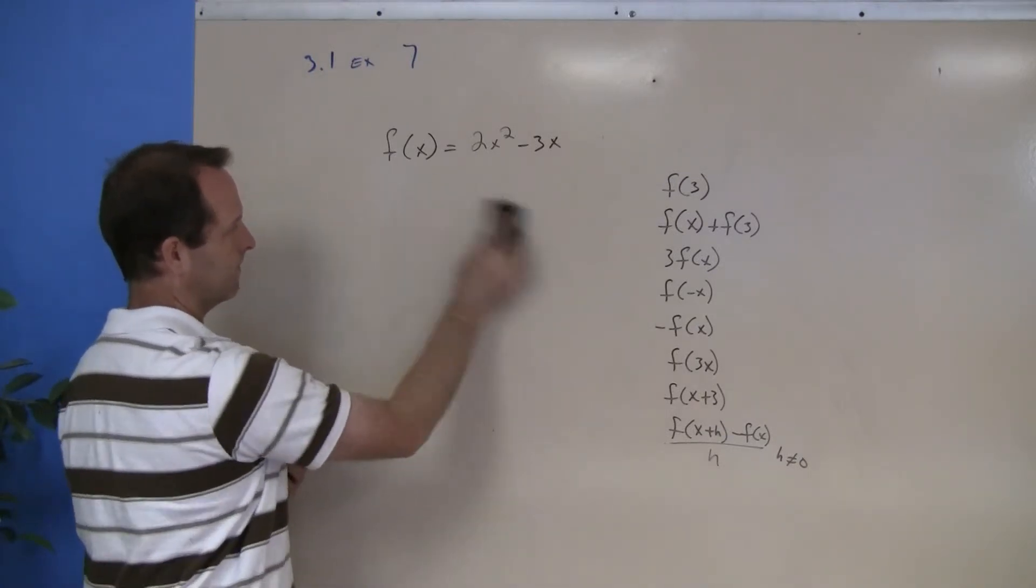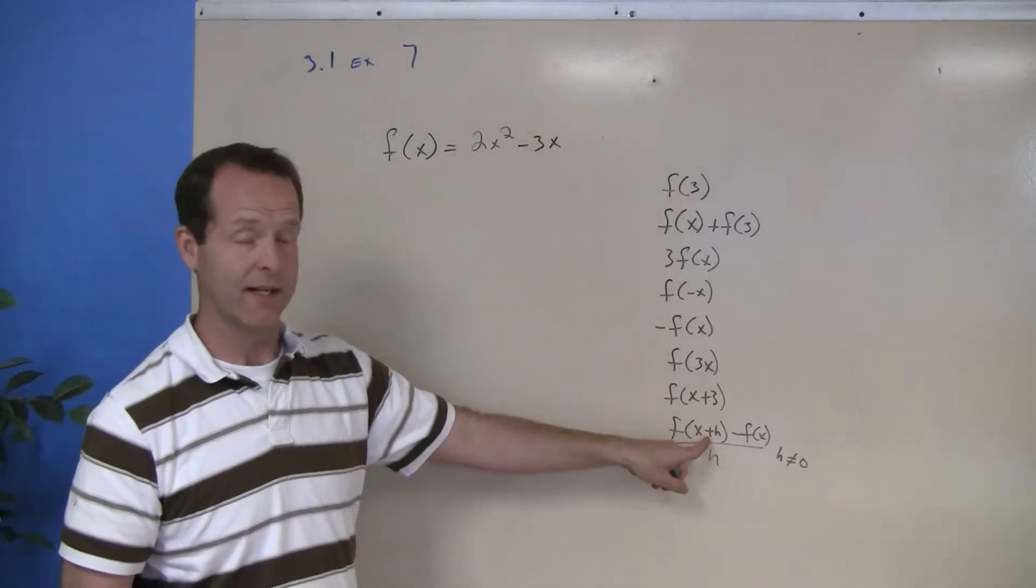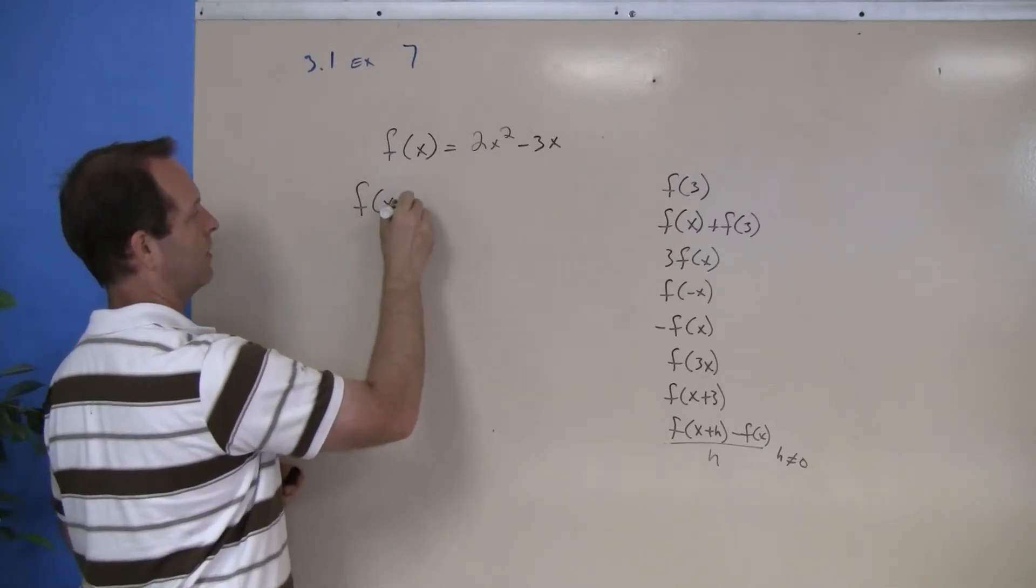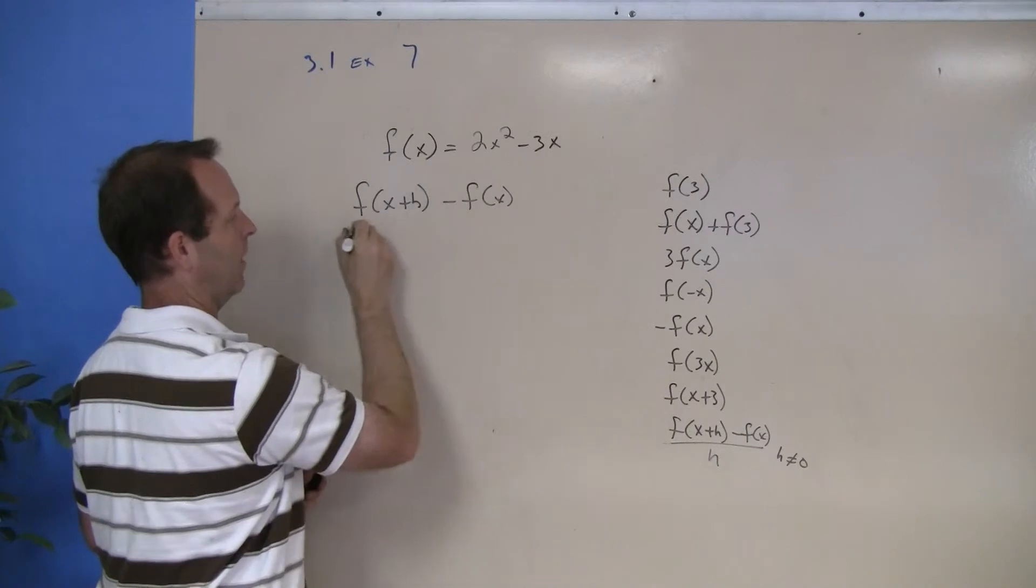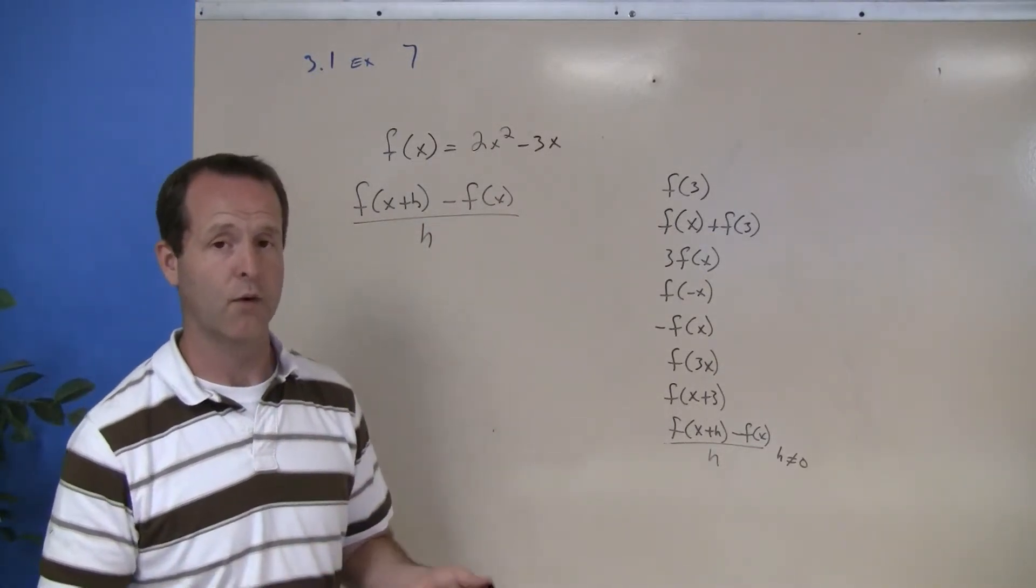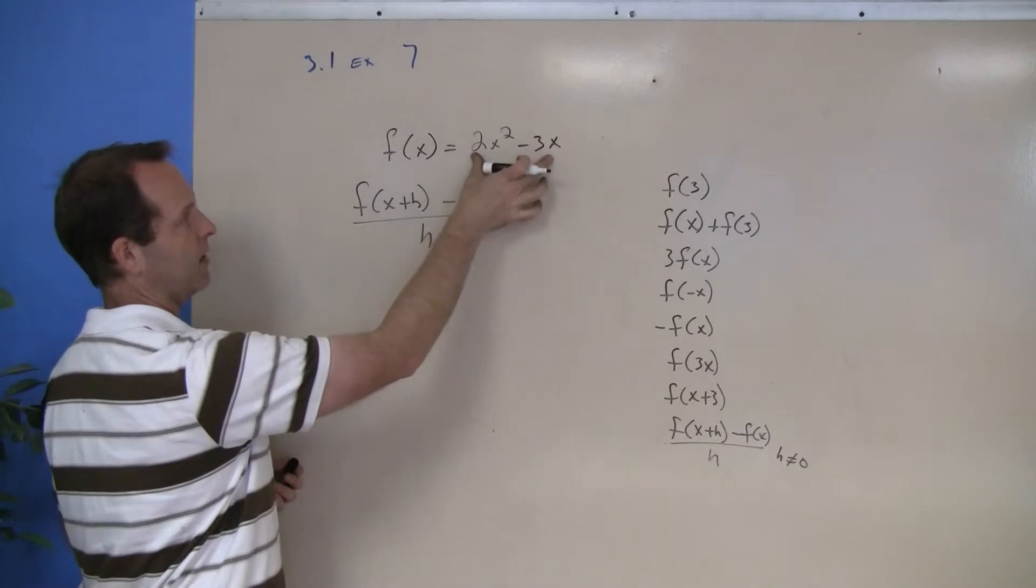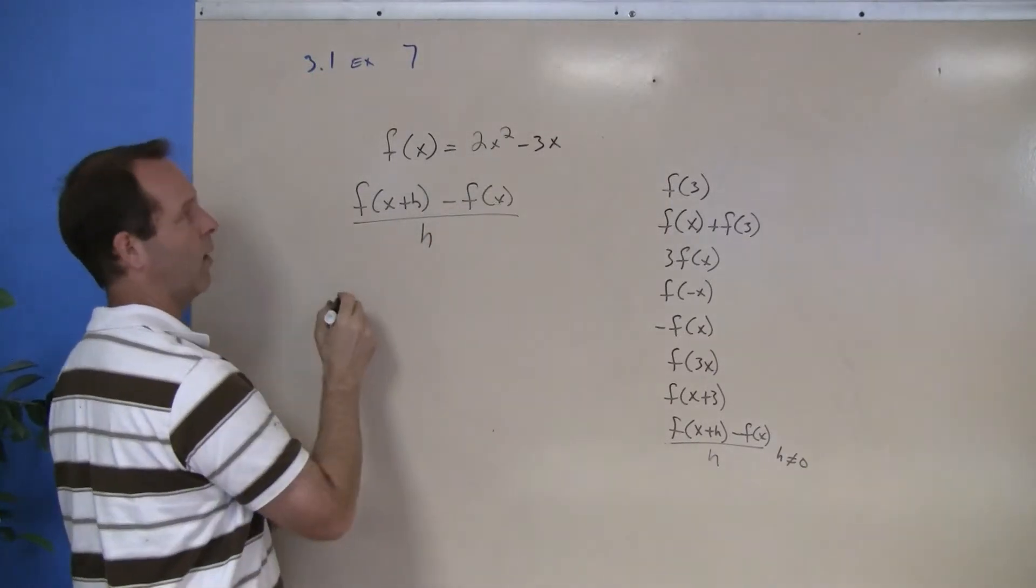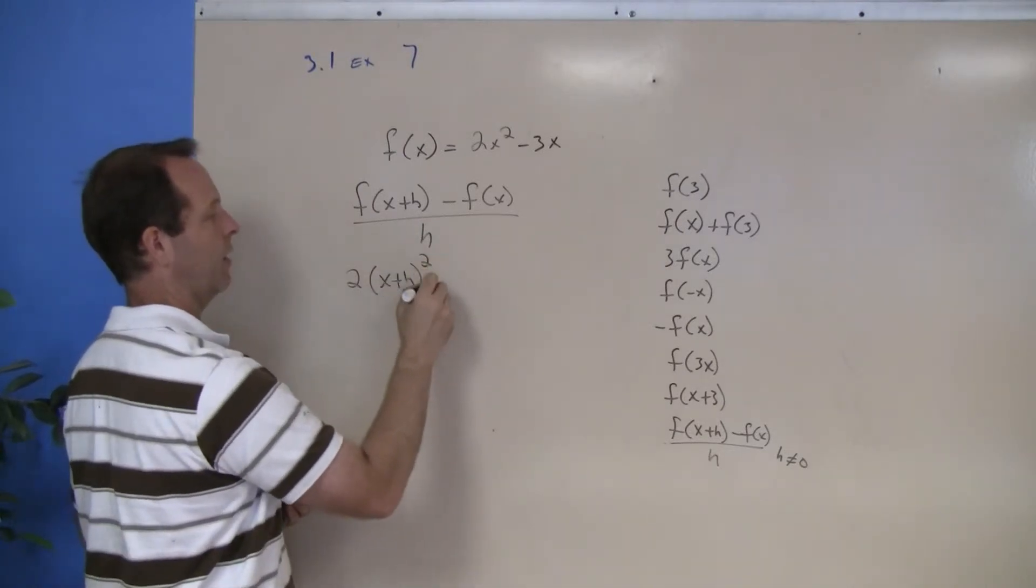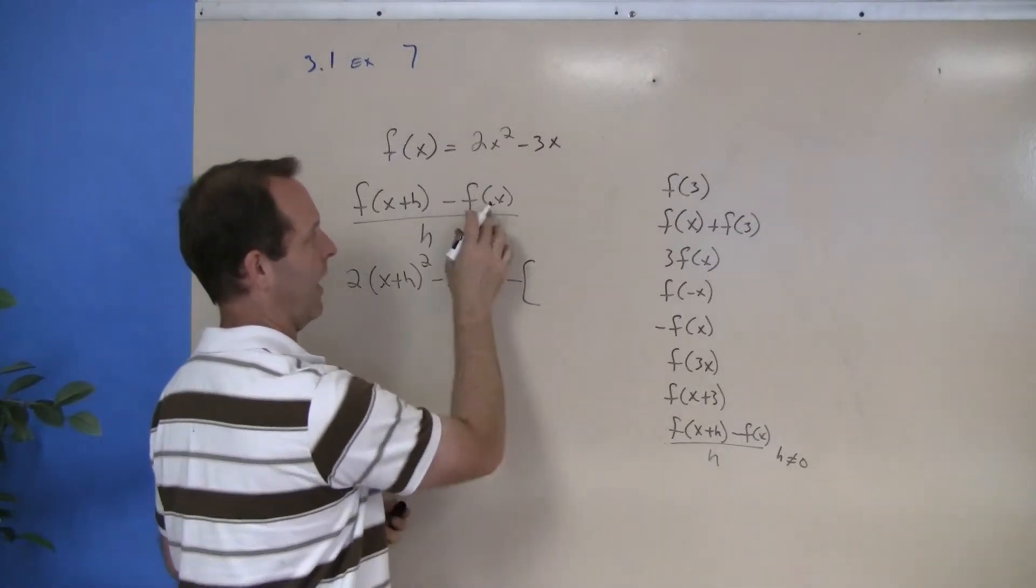Now the last one - the last one does look a little scary, but if I understand that all I'm doing is inserting what it's telling me to into the function, it's manageable. So f(x plus h) minus f(x) all over h, and they're assuming again that h is not equal to 0 because if it were this rational expression would crash and blow up. So f(x plus h) - here's my function - I insert x plus h where each x is at: 2(x plus h) squared minus 3 times (x plus h) minus the entire function f(x).